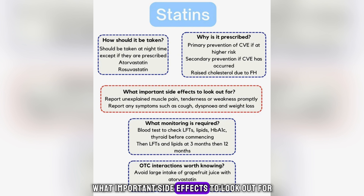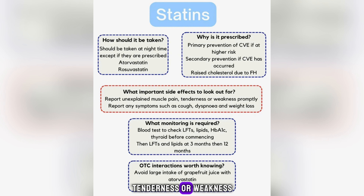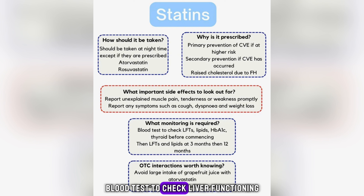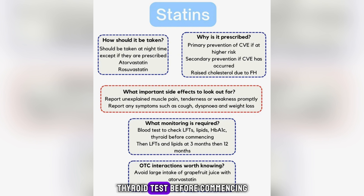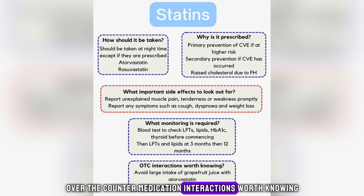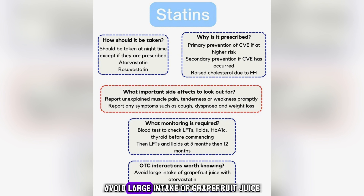What important side effects to look out for? Report unexplained muscle pain, tenderness or weakness promptly. Report symptoms such as cough, dyspnoea, and weight loss. What monitoring is required? Blood test to check liver functioning, lipids, and haemoglobin A1c. Thyroid test before commencing, then liver functioning and lipids at 3 months, then at 12 months. Over-the-counter medication interactions worth knowing: avoid large intake of grapefruit juice with atorvastatin and simvastatin.